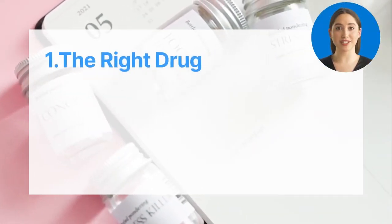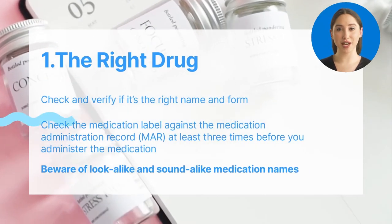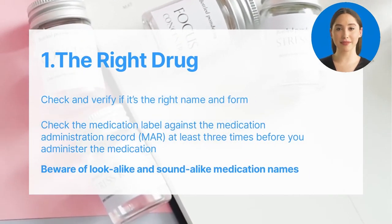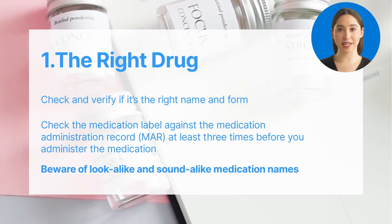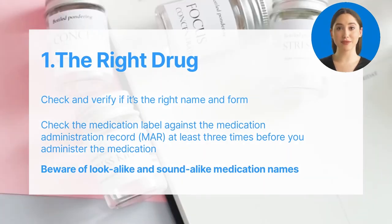The first right of drug administration is to check and verify if it's the right drug, name and form. Check the medication label against the medication administration record at least three times before you administer the medication.